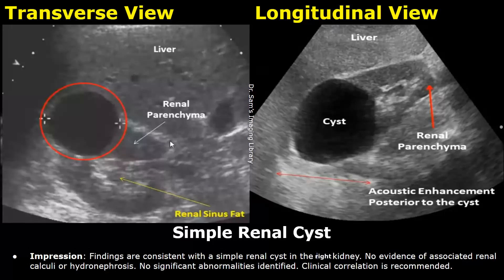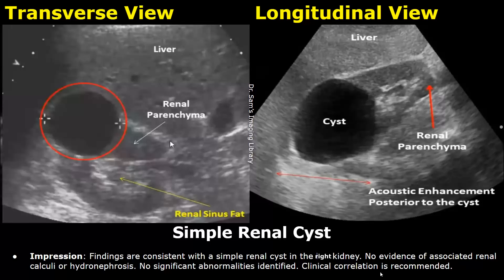This is the impression for this example. Findings are consistent with a simple renal cyst. There is no evidence of associated renal calculi or hydronephrosis, no significant abnormalities identified. Clinical correlation is recommended. It is important to write about clinical correlation because a diagnosis is not only made on ultrasound alone.